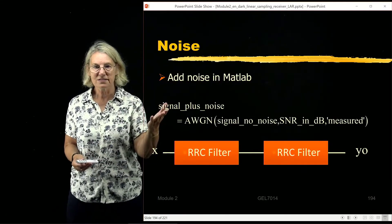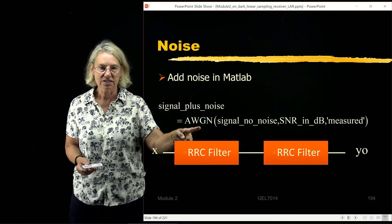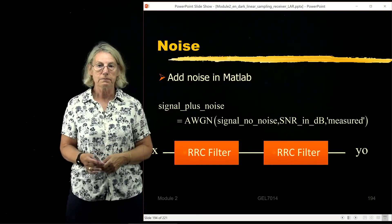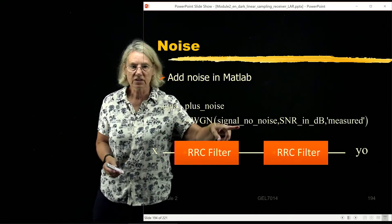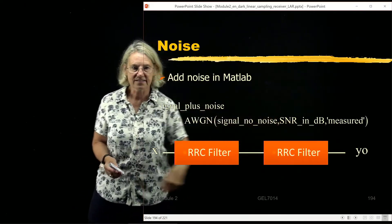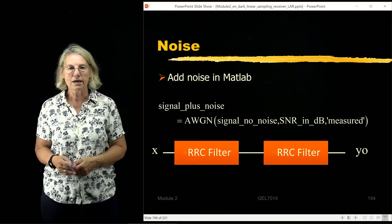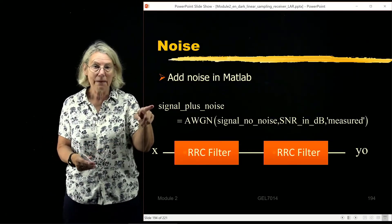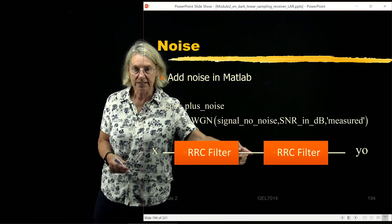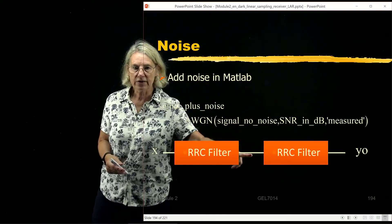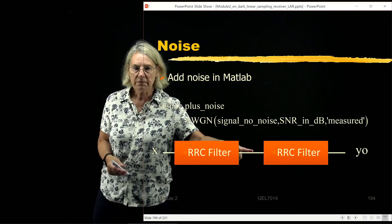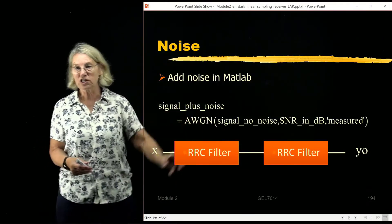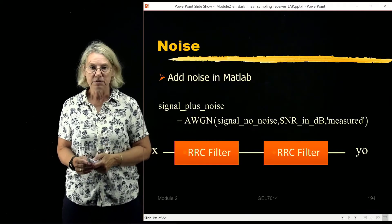So MATLAB has this signal additive white Gaussian noise command, which is very convenient for adding the noise. So you start with your signal with no noise, you specify the signal-to-noise ratio in dB, and it'll happen. So the correct way to use this command is to use this command at the intermediate point here. So you shape it, you transmit it, then it's corrupted by additive white Gaussian noise, and your receiver uses a matched filter to limit the effect of that AWGN.